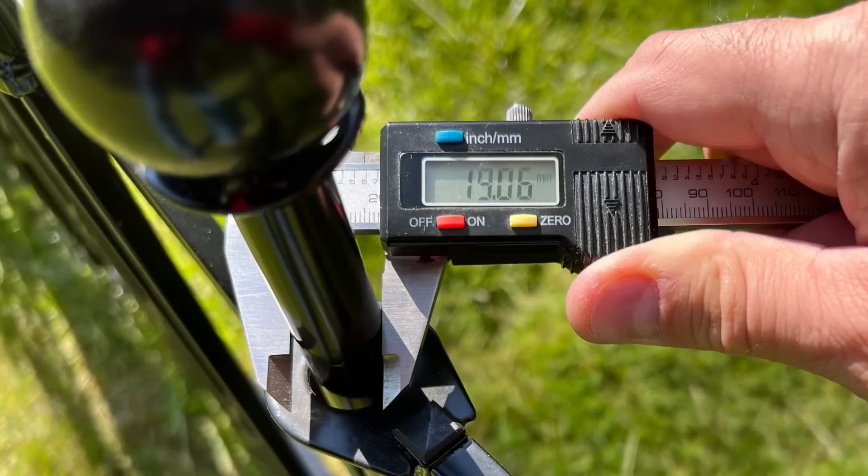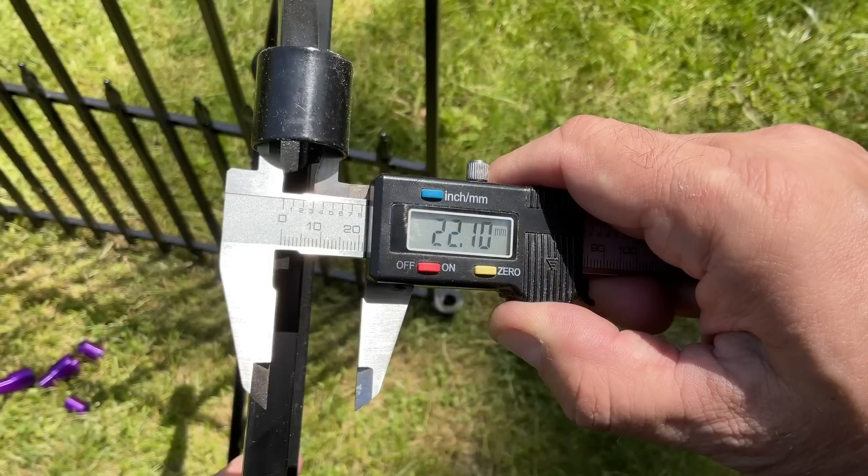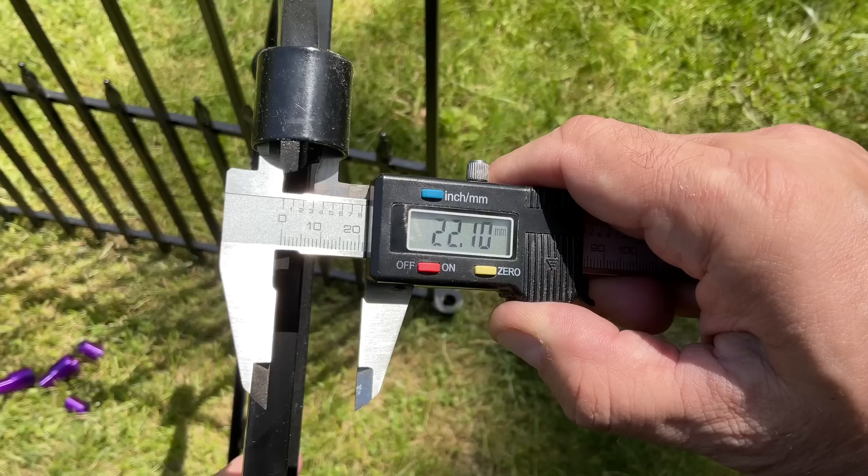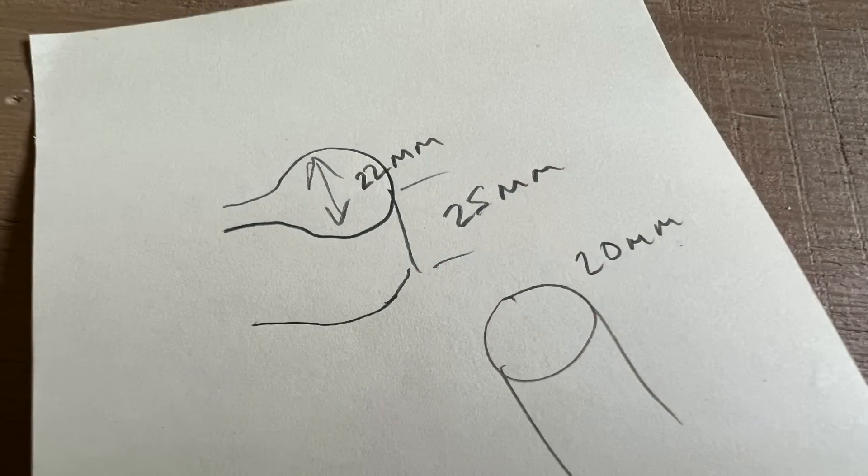I decided to 3D print my own inserts to make this fit tighter. I measured the pole and that was just under 20 millimeters and then the inside of the brackets was at 22 millimeters, so a lot of gap here. I recorded all the dimensions and off I went to Tinkercad.